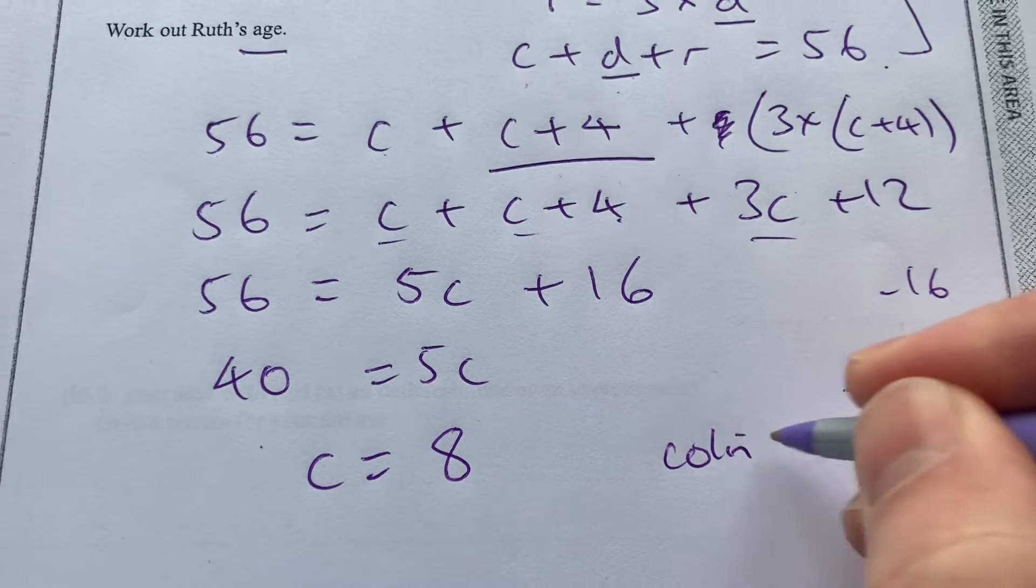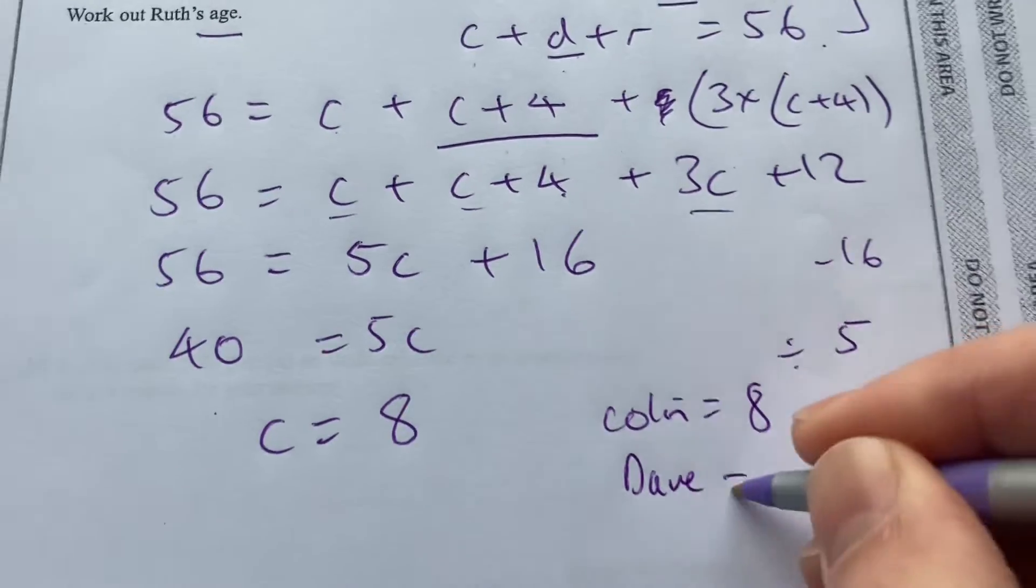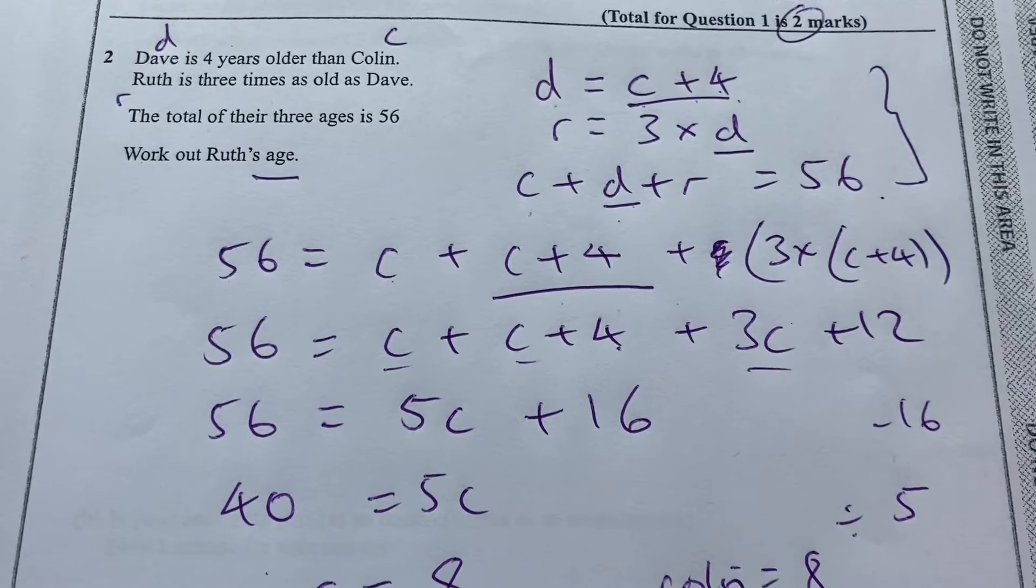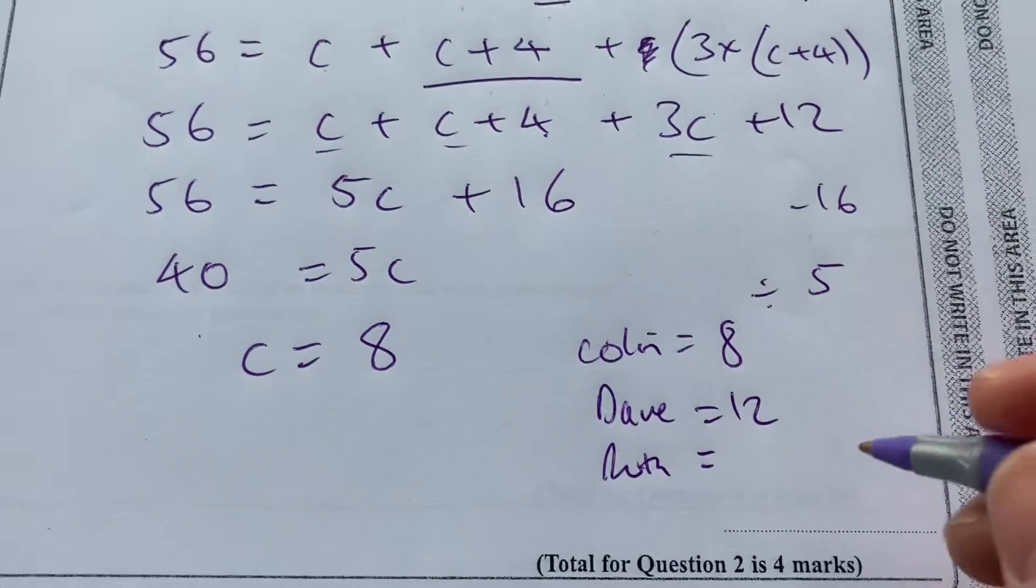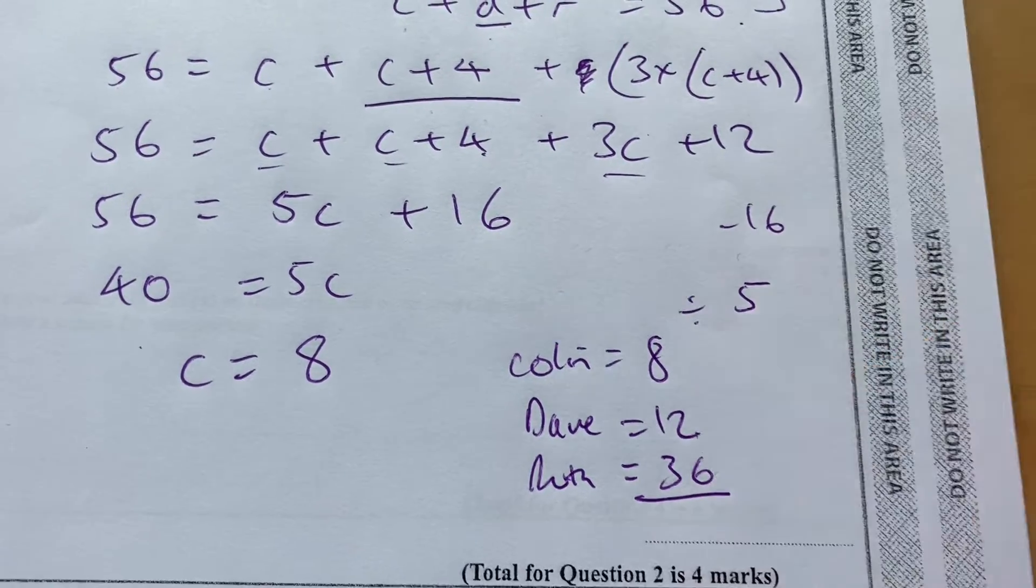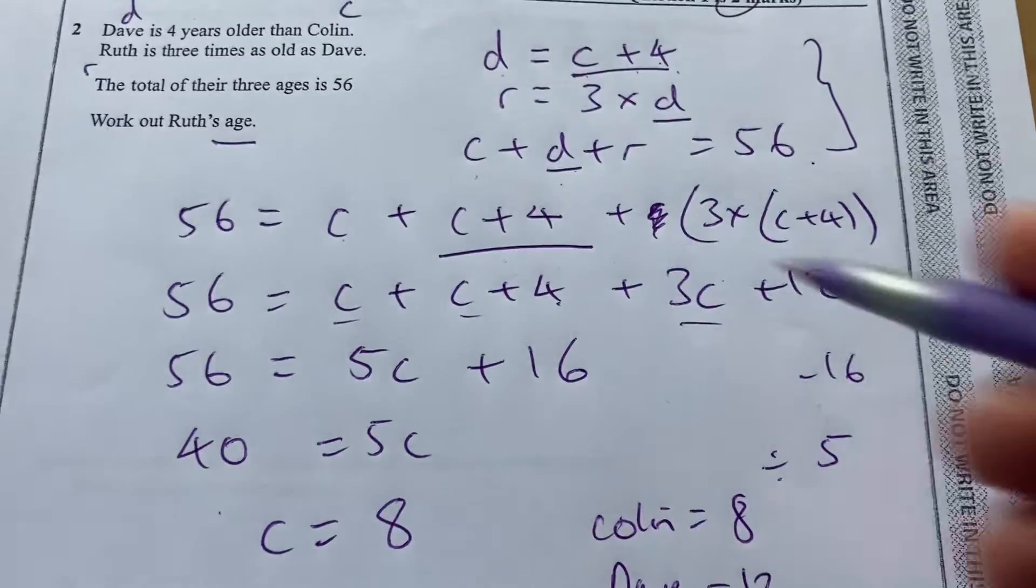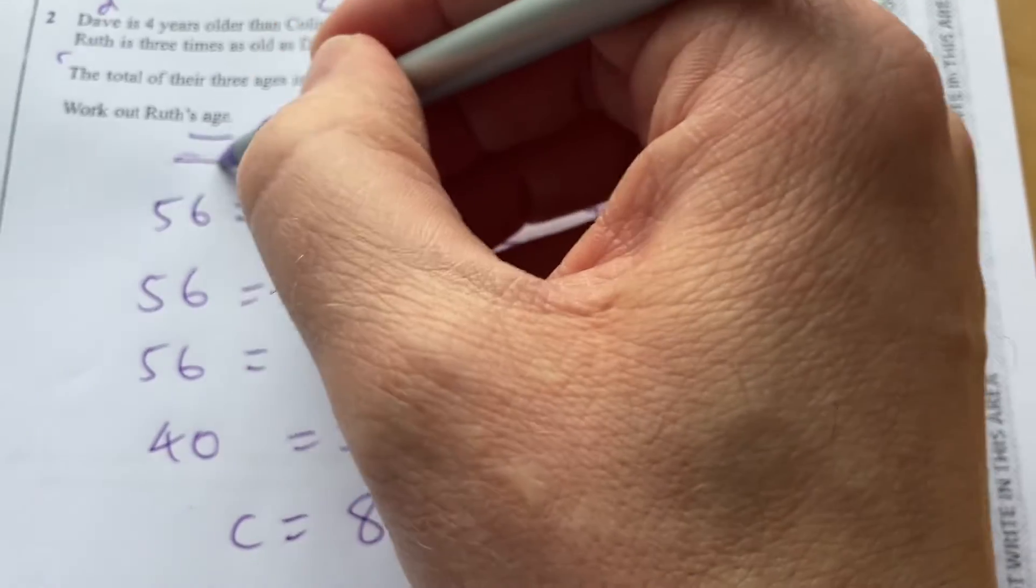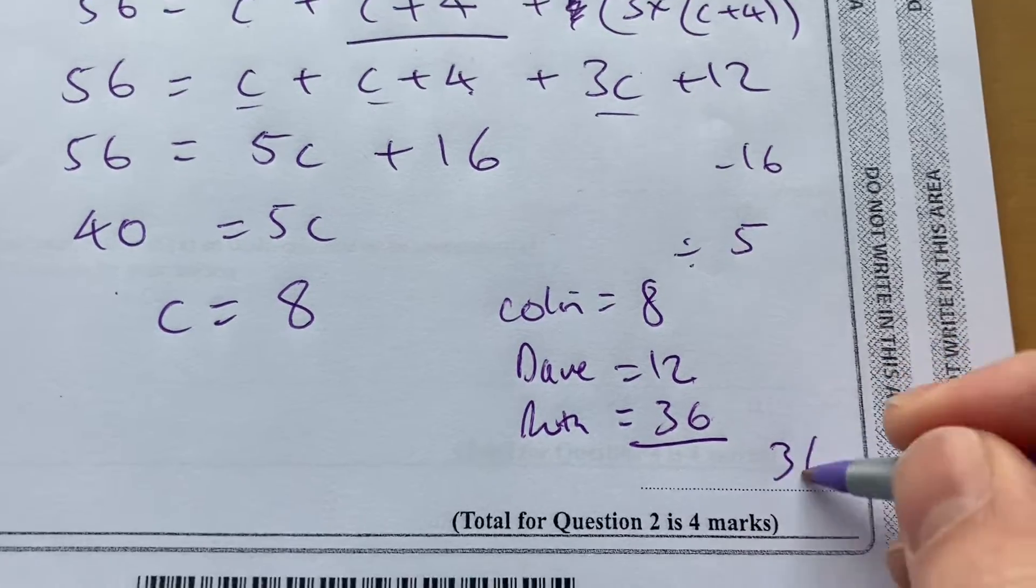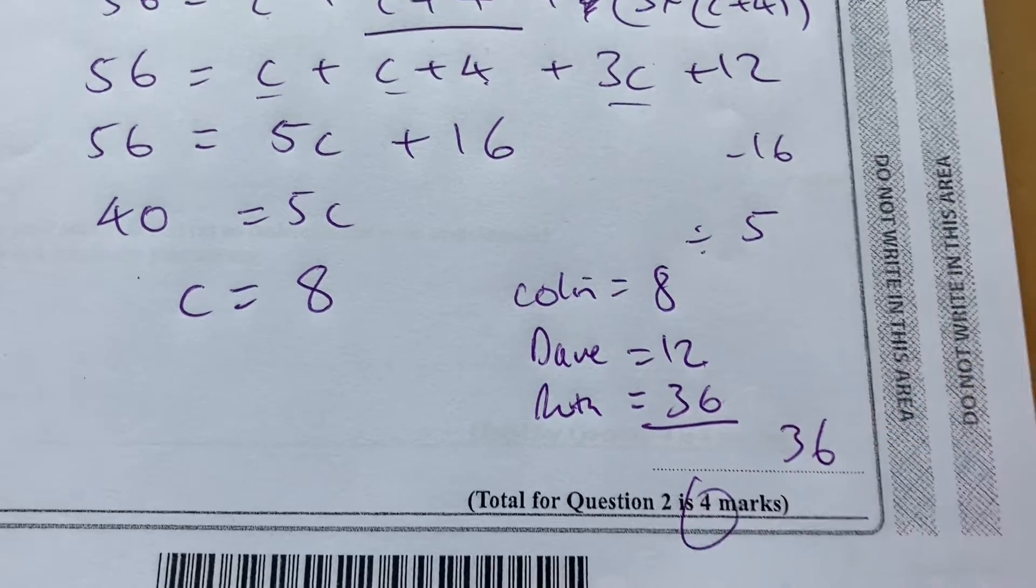So Colin is 8. Dave is 4 years older. He's 12. And Ruth is 3 times as old as Dave. So Ruth is 36. And that's 20 plus 36 is 56. So the final question to actually answer the question is work out Ruth's age. And that's 36. A nice four-mark question there.